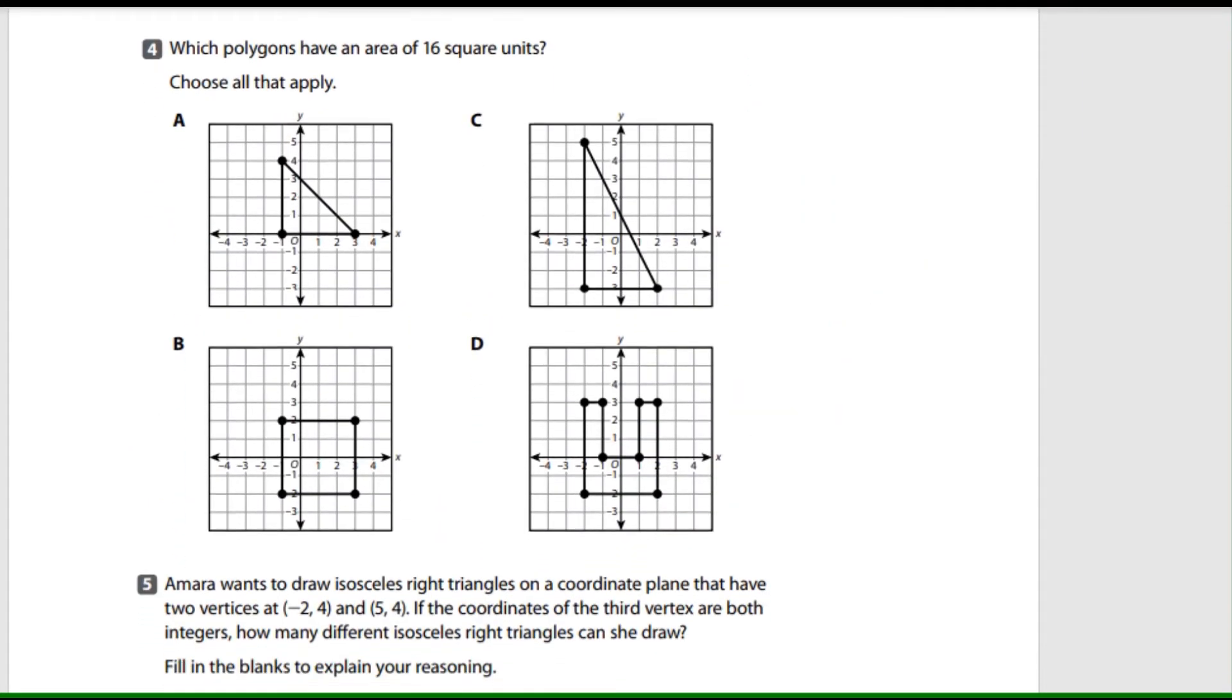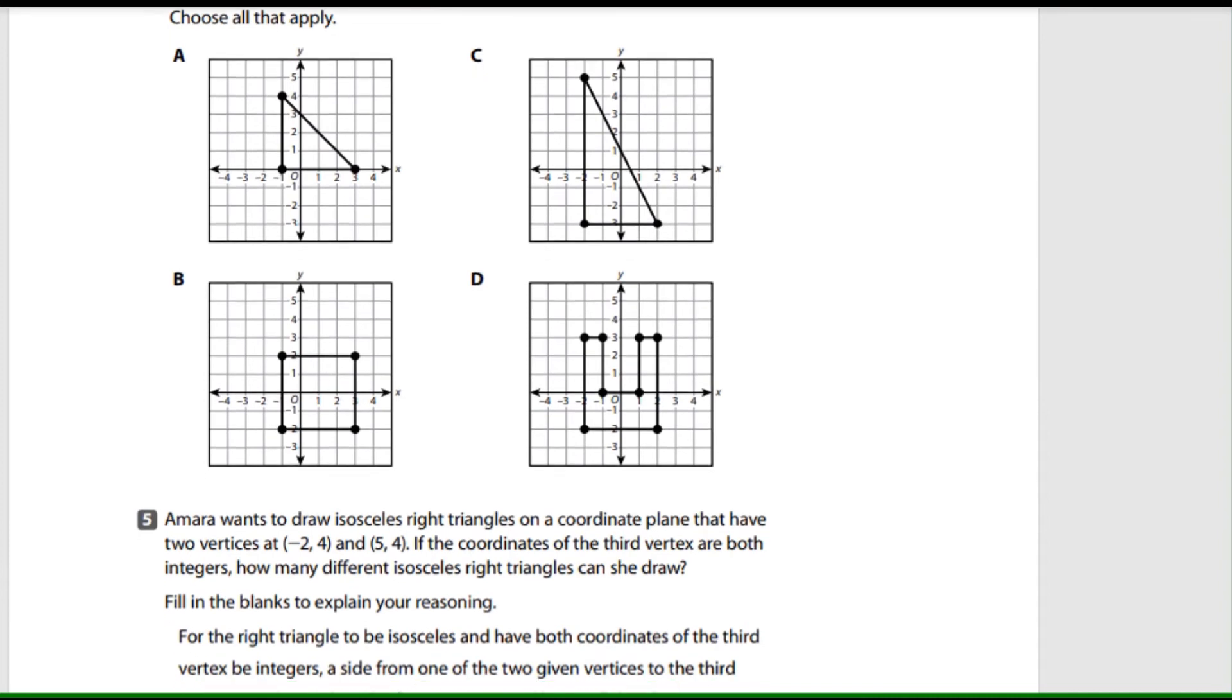Alright, let's move on to the next one. Number four. Which polygon have an area of 16 square units? You definitely need to know how to do this one. So you need to first identify the shape. So right here, we have a triangle. And what is the formula that we use for a triangle?